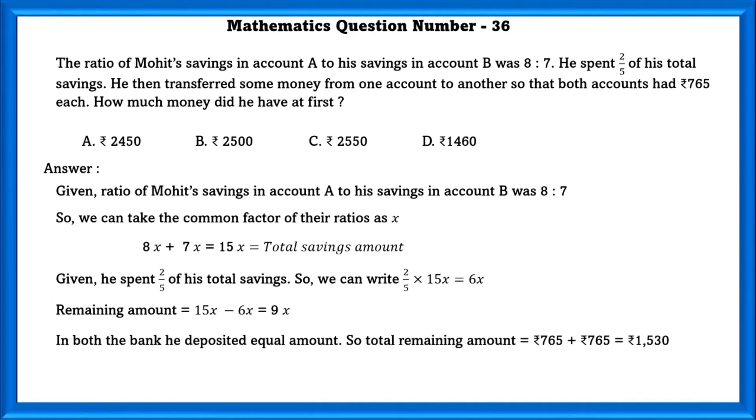In both the banks, he deposited equal amount. So therefore, remaining amount is equal to 765 plus 765 that is 1530. That is also equal to 9X. So using this, we can find the value of X that is 170.